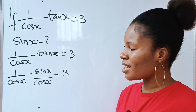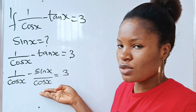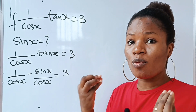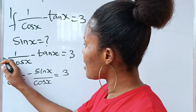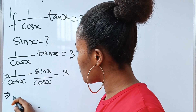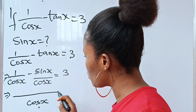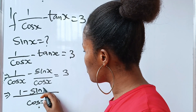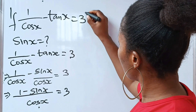Both terms have cos x as a common denominator. So we can rewrite this as 1 minus sine x as the numerator, all over cos x, is equal to 3.